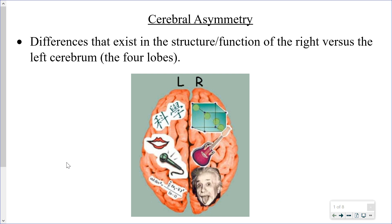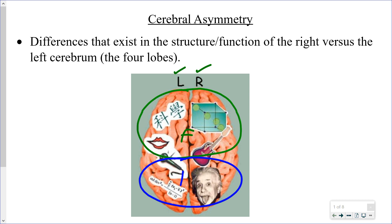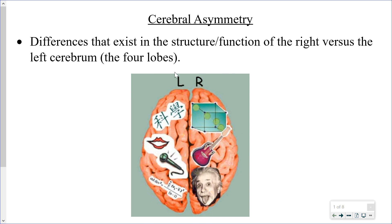This picture is looking at the brain from above, so we can see it showing the left side and the right side. Somewhere in here is going to be the frontal portion of the cerebrum, and here is going to be the parietal portion. Cerebral asymmetry refers to the fact that even though the two sides of the cerebrum look pretty much the same, they do have slightly different functions.